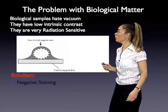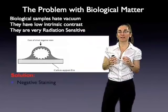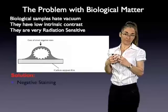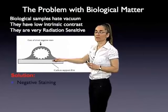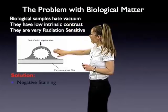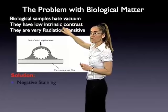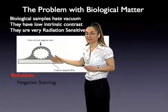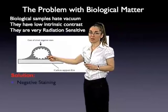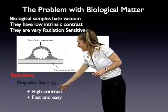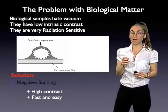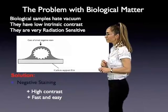The first solution to occur historically was negative stain. In this case, your sample is embedded in a low concentration salt solution of a very heavy atom, typically uranium. The sample is embedded in this solution, then dried to a thin layer and introduced into the electron microscope. Because now there's no water, there's no problem with the vacuum. The heavy atom — uranium — generates very high contrast, getting over the second problem. And because what you're imaging is the cast generated by the stain rather than the protein, you also reduce the problem of radiation damage. The big pluses of this methodology are the high contrast and the fact that it's fast and easy.